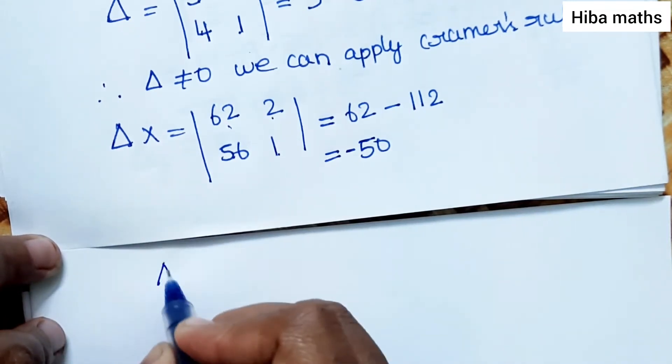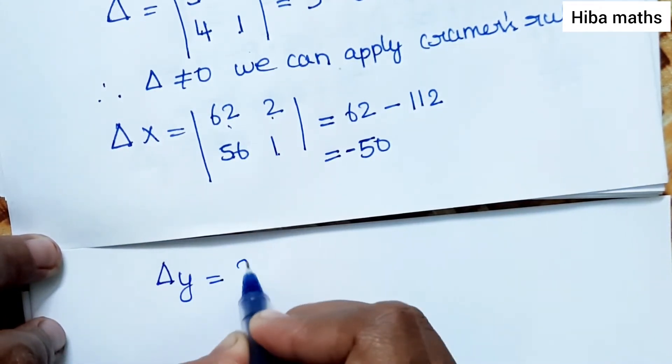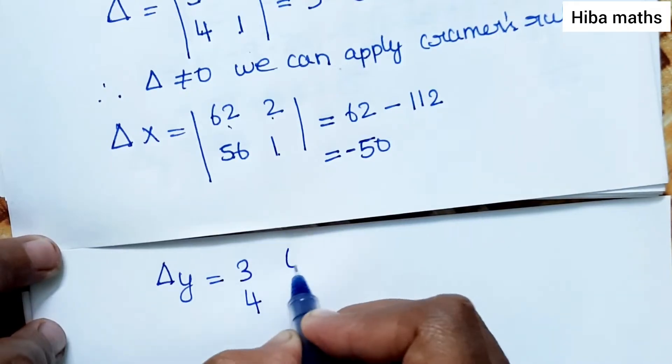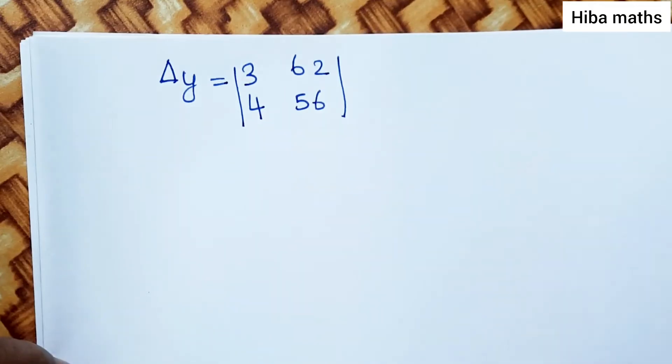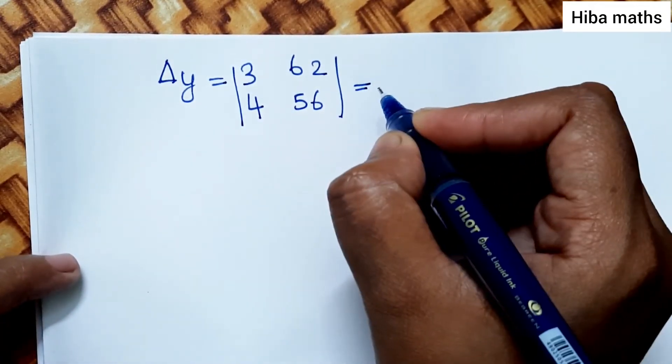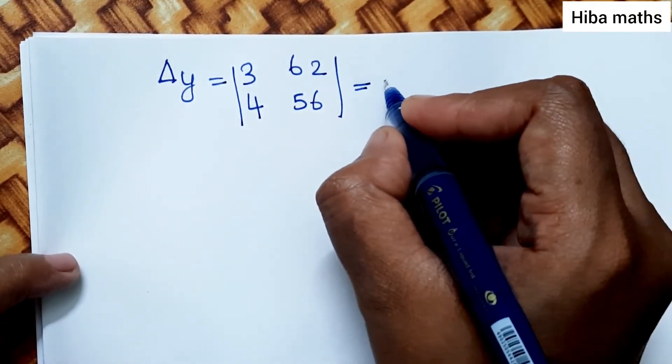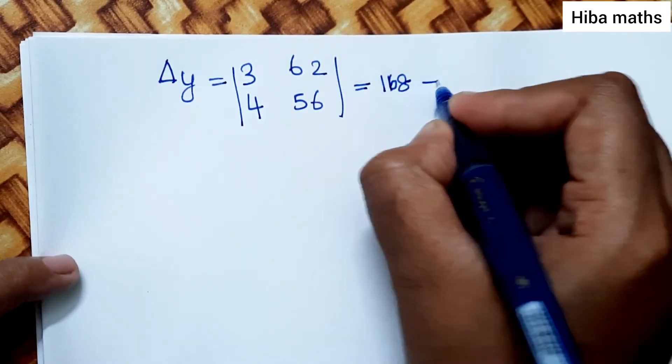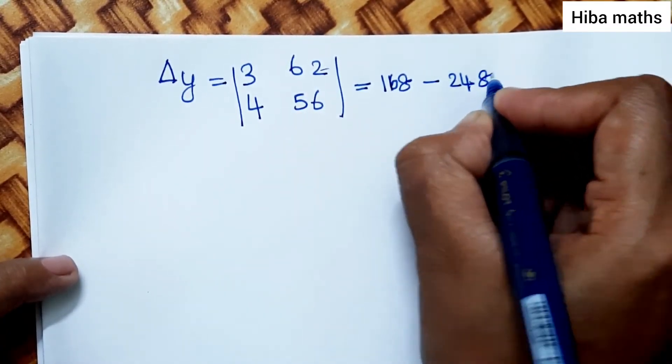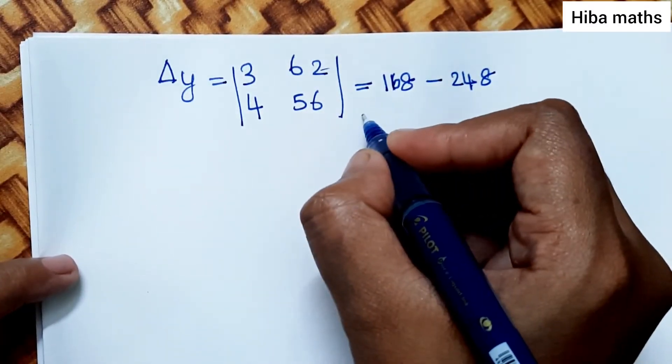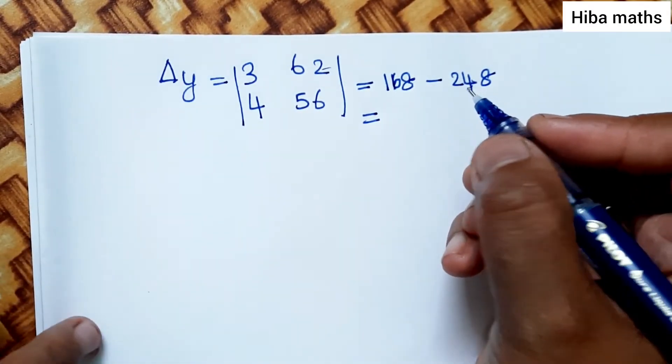Delta y, we change the first column with the y column to get the resultant value.